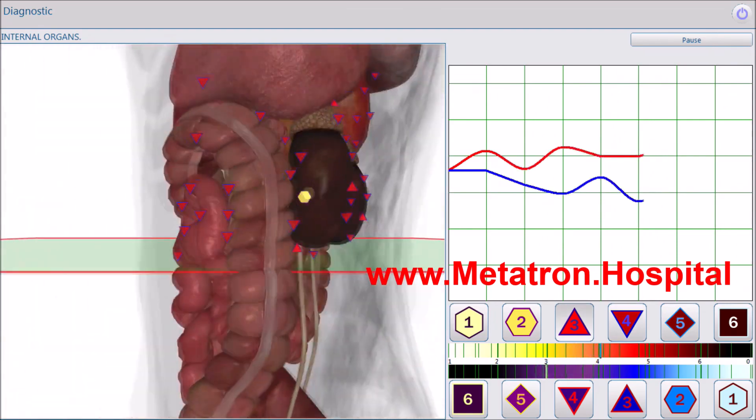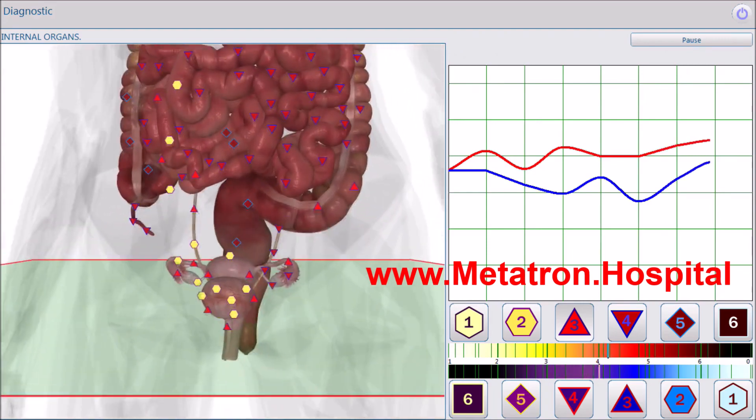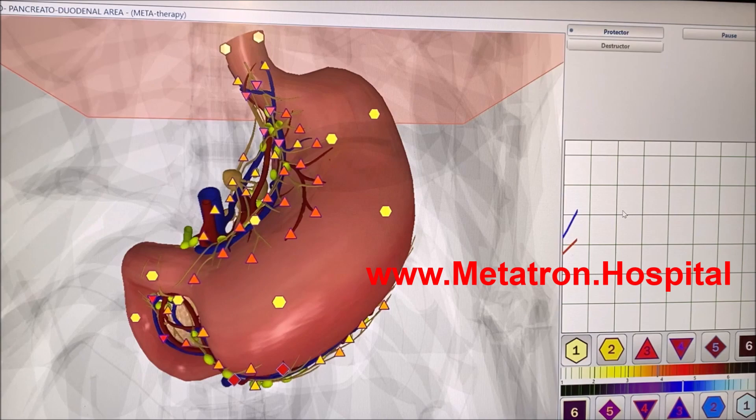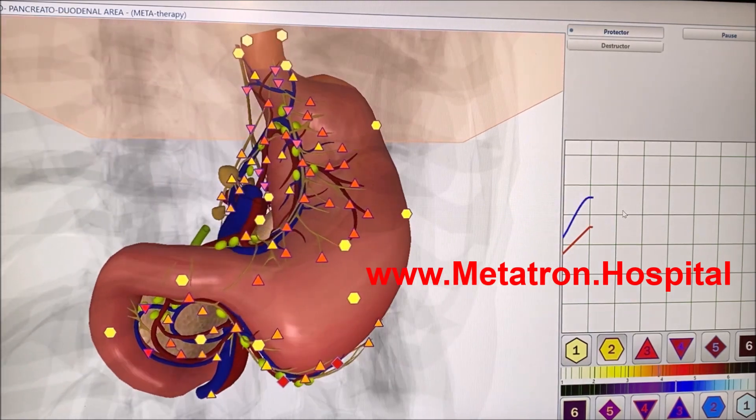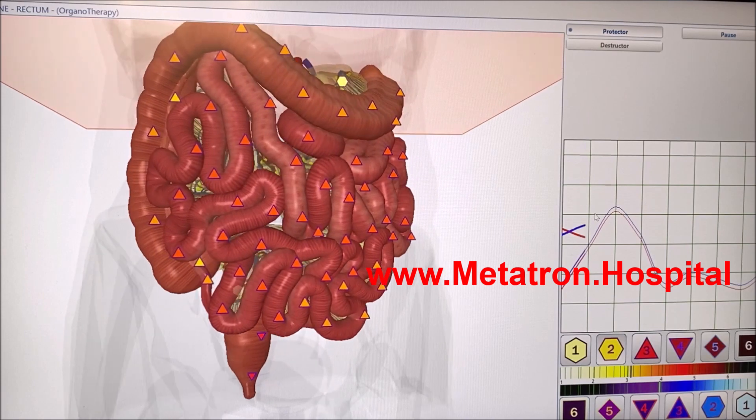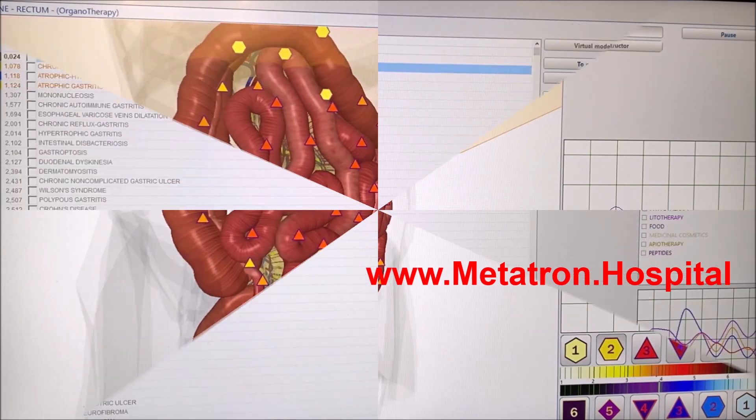Metatron remote can be applied at any distance using the client's information, which is used as a medium for quantum link between the Metatron device and the client. This was referred to as instantaneous action at a distance by Einstein. Modern physicists named it quantum entanglement.